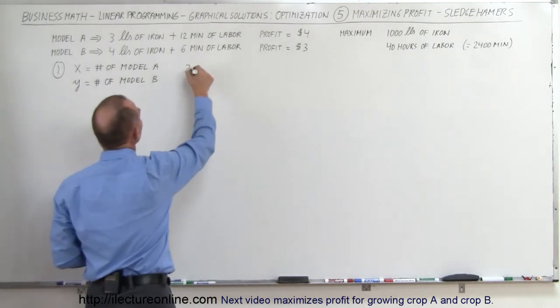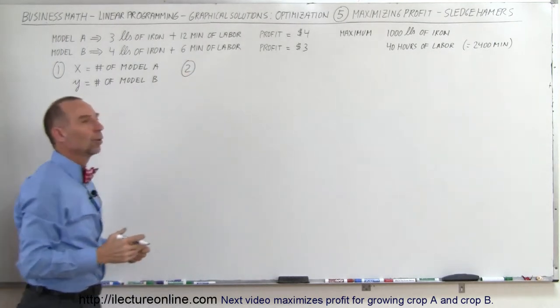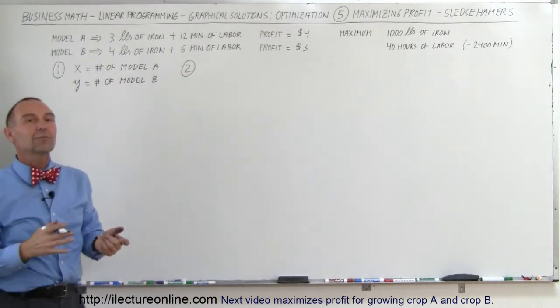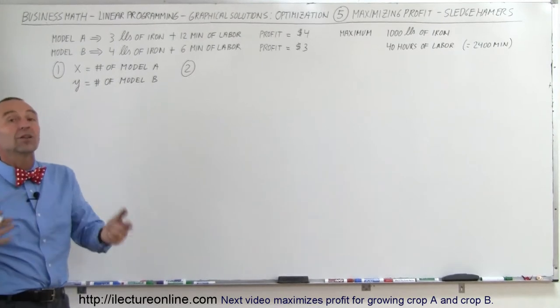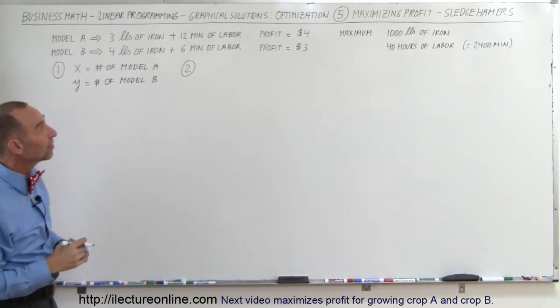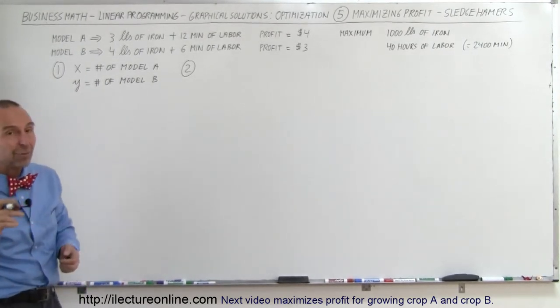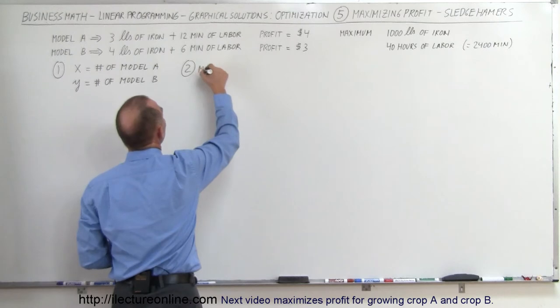The second step is we need to determine if we're maximizing or minimizing something and what it is we're maximizing or minimizing. In this case, we're maximizing profit.